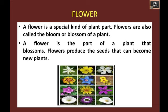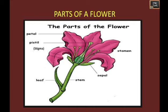We'll see in detail about a flower. A flower is a special kind of part of a plant. Flowers are also called the bloom or blossom part of a plant. A flower is a part of a plant that blossoms. Flowers produce the seeds that become new plants. You can see the parts of a flower — first the petal, then the center yellow part called the pistil or stigma.